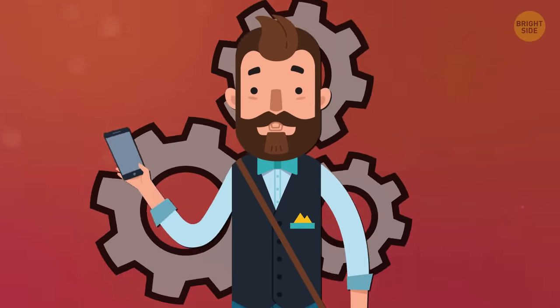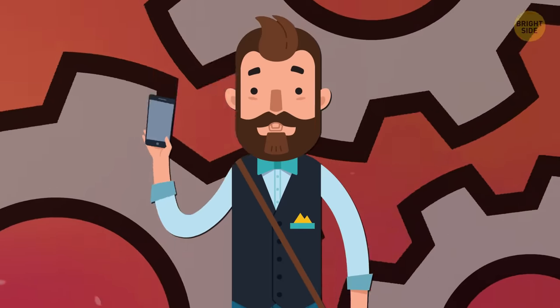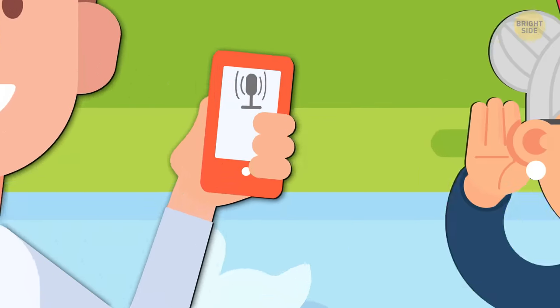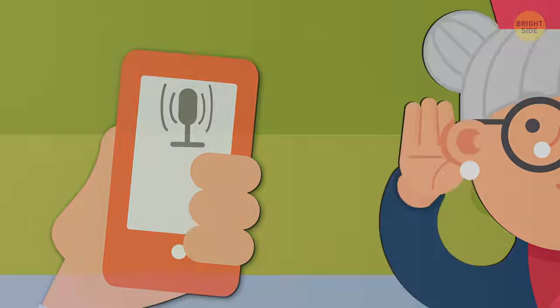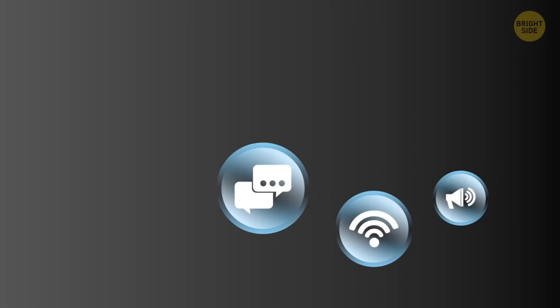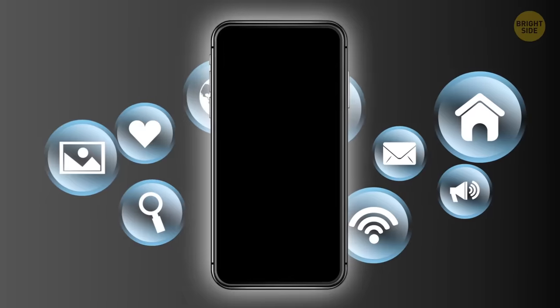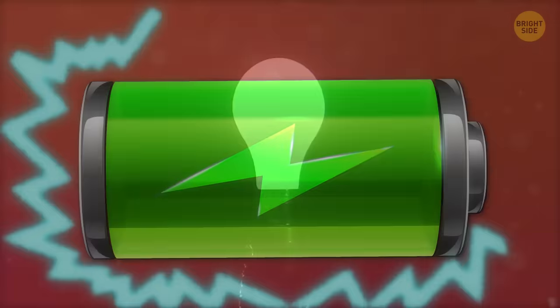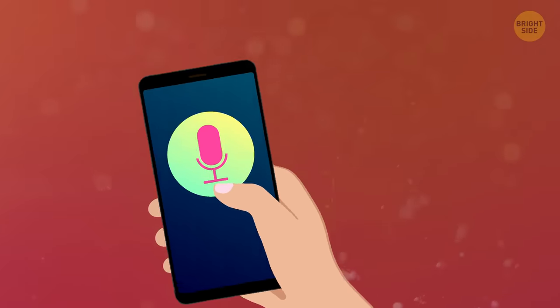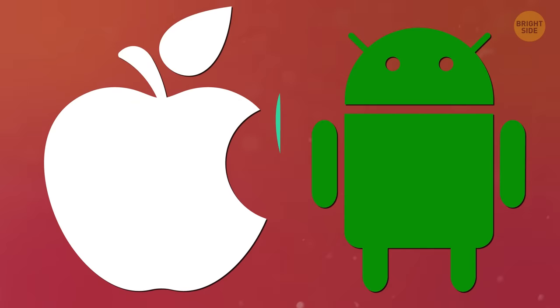Your device has to be constantly listening for those keywords. That means more apps running in the background and more power draining even when your phone isn't in use. If you want to cut power costs, you can turn off hot words under the Siri or voice setting on your Apple or Android device.